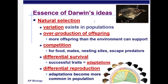Therefore there's differential reproduction — adaptations become more common in a population if they're good adaptations for the environment. If you have good adaptations, you're going to survive, reproduce, and pass those adaptations on to your offspring. These are some of the most important ideas that come with Darwin's idea of natural selection.